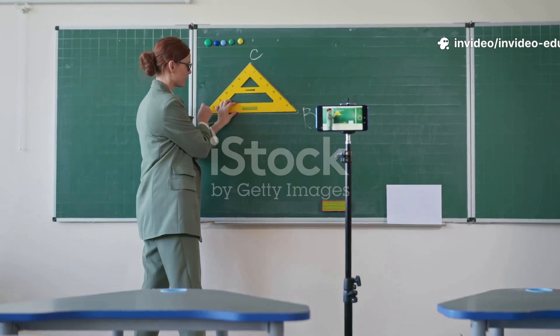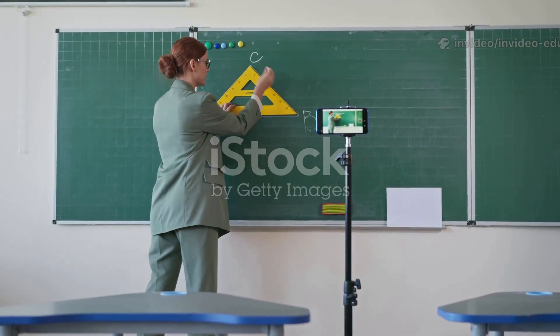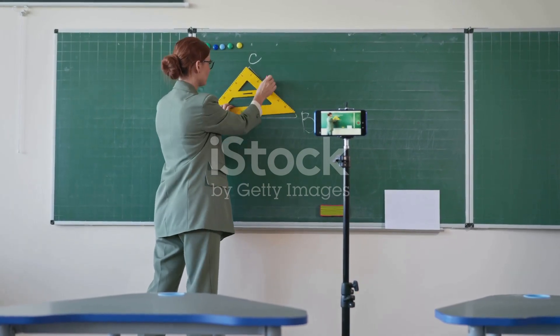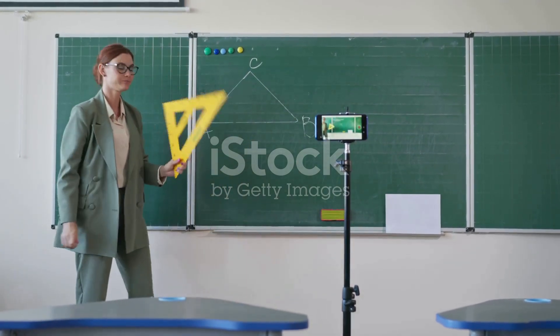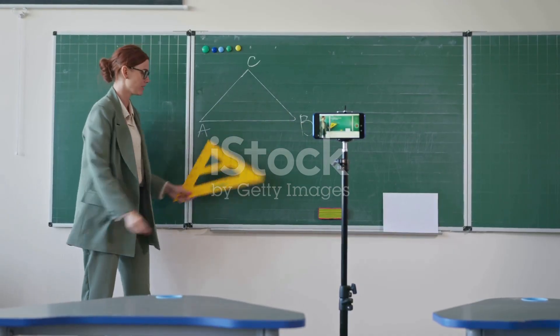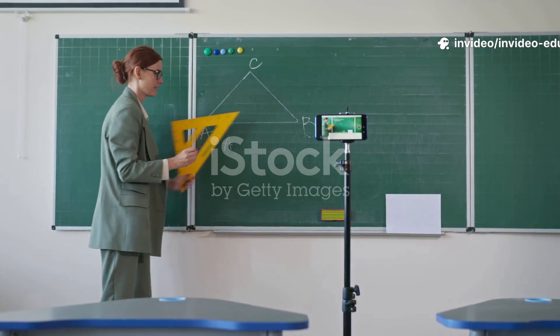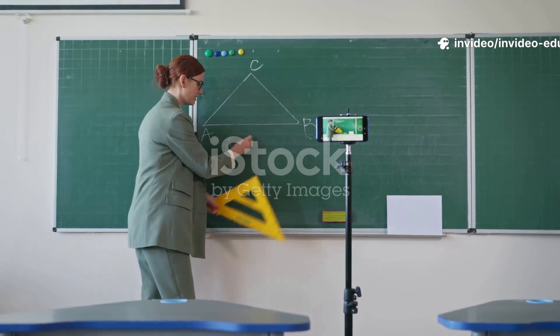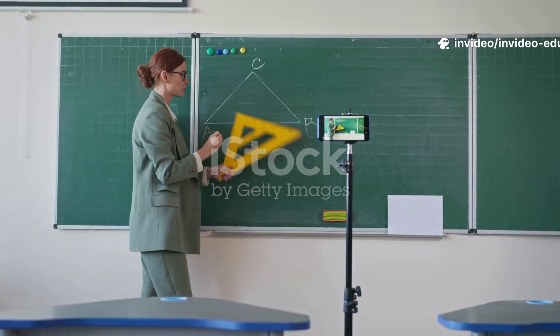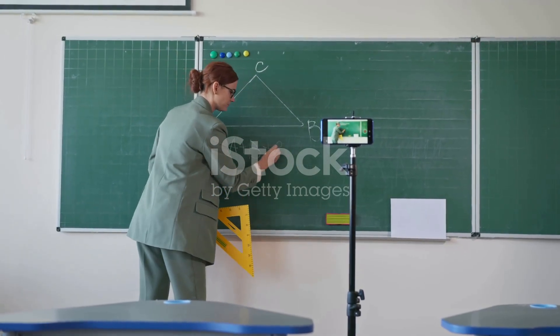Today, we're going to unlock the secrets behind these everyday observations. We'll be diving into three fundamental concepts from your Class 6 science textbook. First, we'll learn the scientific way to describe the position of any object. Second, we'll explore the core ideas of what it means for something to be in motion or at rest. And finally, we'll journey through the different types of motion we see all around us in our daily lives.